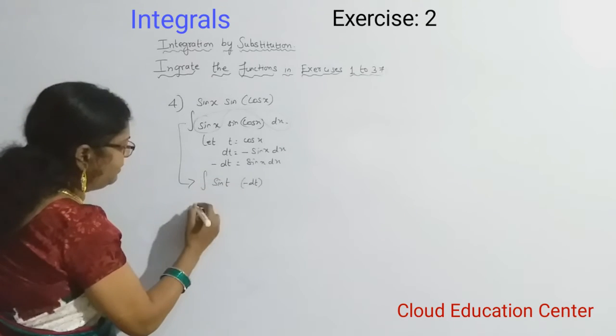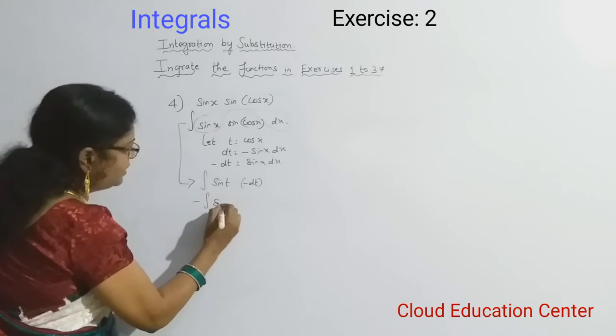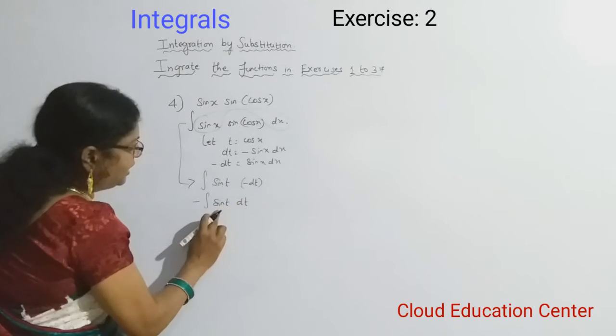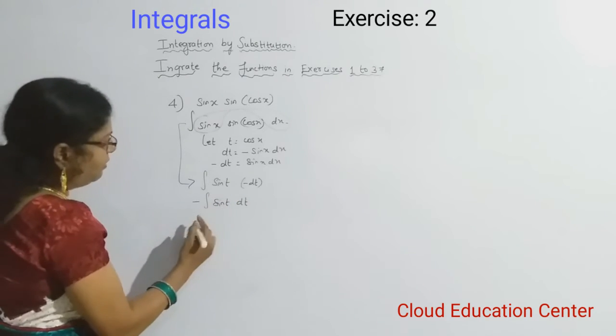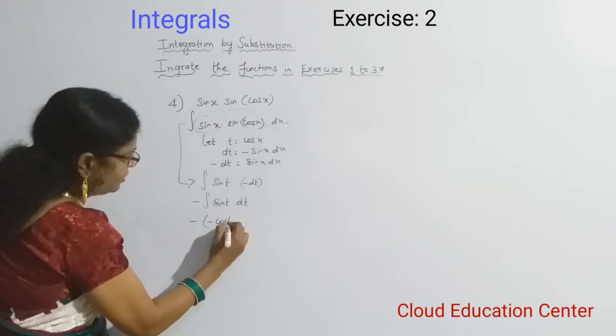Now we will integrate. We will bring the minus in the front. Minus integration of sin t dt. Integration of sin t is nothing but minus cos t. We will get minus cos t.